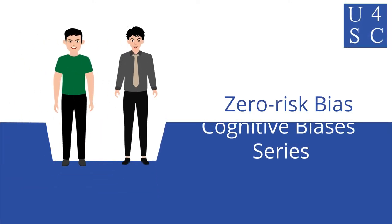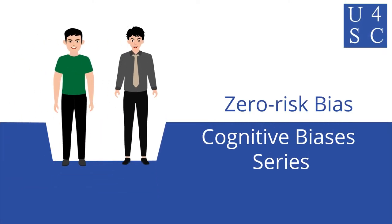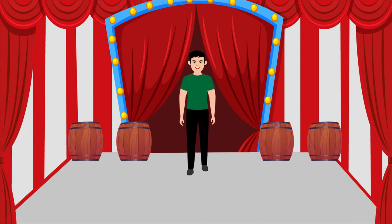Academy for Social Change presents Zero Risk Bias. Alberto is bobbing for apples at the carnival.